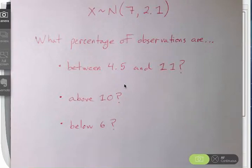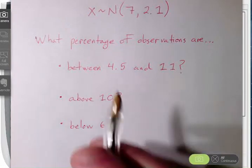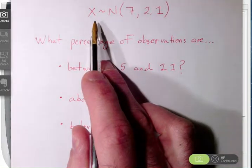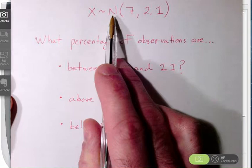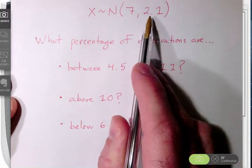Hi there. Let's take a few minutes to review how the shade norm command works on your graphing calculator. So let's assume that we have a variable X. It is distributed normally with a mean of 7 and a standard deviation of 2.1.